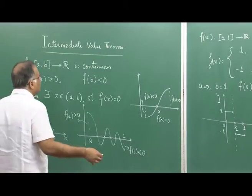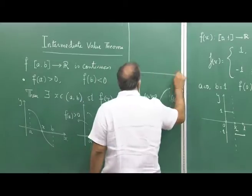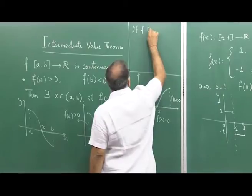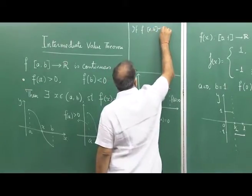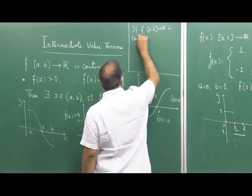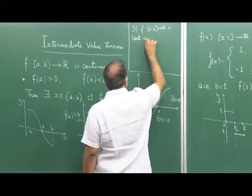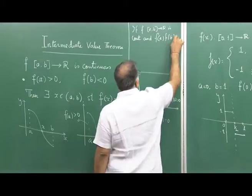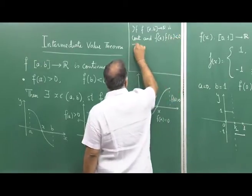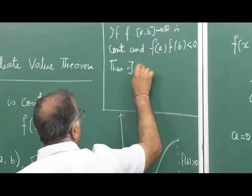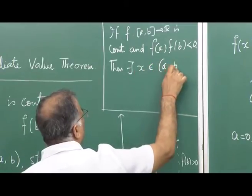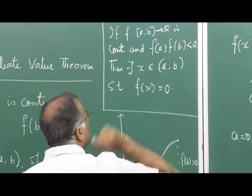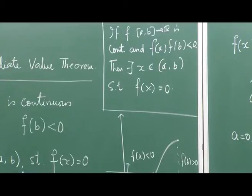So this is one form of the theorem. To be more precise, you can write it in a better form: if f from [a, b] to R is continuous (writing 'cont' for short) and f(a)·f(b) is negative, then there exists an x lying in the open interval (a, b) such that f(x) must be equal to 0. This is the form which is much more acceptable.